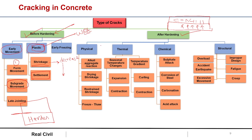After hardening, cracks are categorized into physical, thermal, chemical, and structural causes. In physical causes, first is alkali-aggregate reaction where a gel forms due to the reaction between alkali and silica, causing pattern-type cracks. Second is drying shrinkage, when the water in the concrete pores evaporates causing cracks. Third is restrained shrinkage.